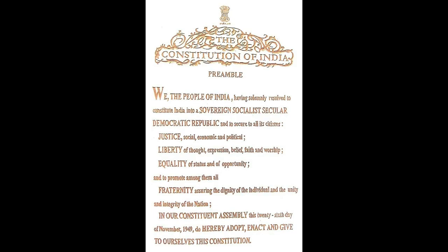The Constitution of India Preamble: We, the people of India, having solemnly resolved to constitute India into a sovereign, socialist, secular, democratic republic and to secure to all its citizens Justice — social, economic and political — Liberty of thought, expression, belief, faith and worship, equality of status and of opportunity, and to promote among them all fraternity assuring the dignity of the individual and the unity and integrity of the nation. In our Constituent Assembly this 26th day of November 1949, do hereby adopt, enact and give to ourselves this Constitution.